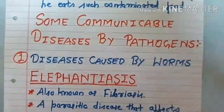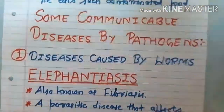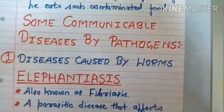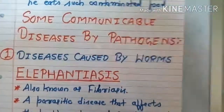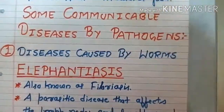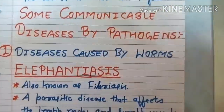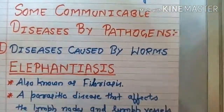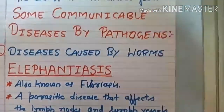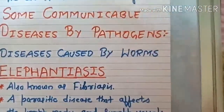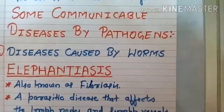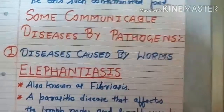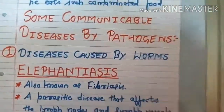Now we will see some communicable diseases caused by pathogens. Pathogens are disease-causing germs — such as bacteria and viruses. These all are examples of pathogens.